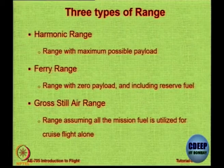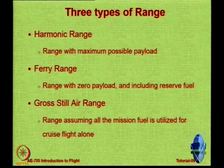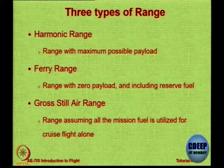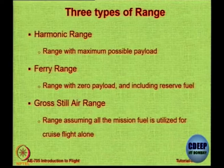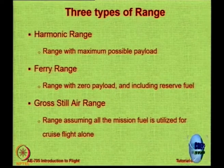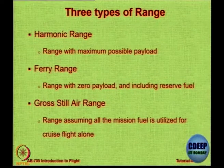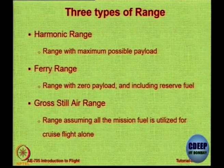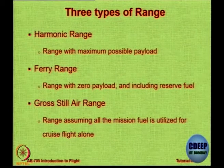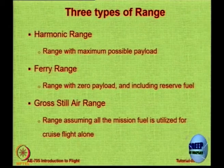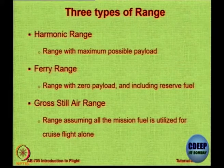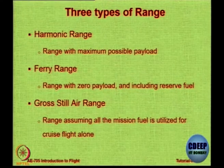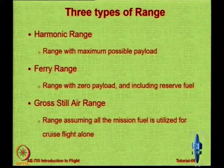Gross still air range is a peculiar quantity. Imagine a magical crane that lifts the aircraft to cruising altitude and throws it at cruising speed. You have somehow by magic reached cruising altitude and cruising speed — now how far can you travel with full fuel and no en-route winds? That is called gross still air range. 'Still air' means no headwind, no tailwind. 'Gross' means the raw theoretical value — no fuel consumed in takeoff, warm-up, taxi, climb, or descent. The entire fuel is used only in cruise at cruising altitude and speed.